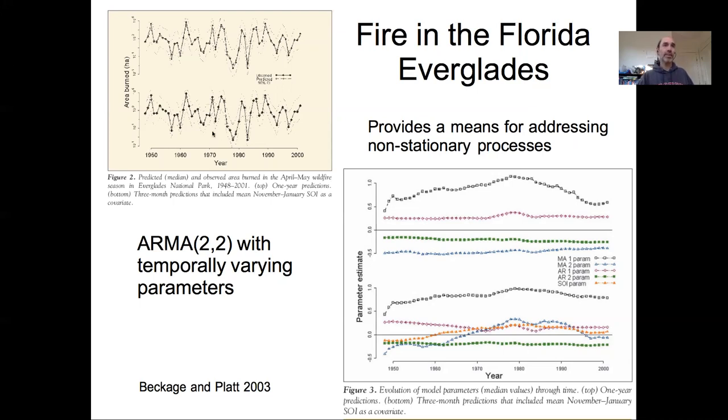Now this was in the short term a successful model in capturing variability in fire, but over the long term faced the challenge that fire over this longer time period from the 40s up until the 2000s, that fire was not stationary, that it was changing through time. So this ARMA model was capturing the short term year to year variability in area burned, but it wasn't capturing the longer term changes in the fire regime rather than changes in the fire dynamics.